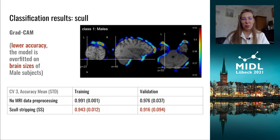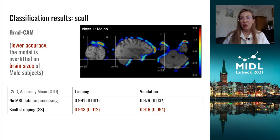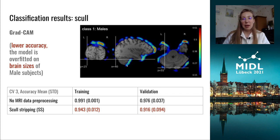After skull stripping the data, the model lost accuracy from the most available feature. The next target feature for the model became brain size — a physiologically meaningful feature, but not as dominant as the Adam's apple had been. We then thought about how to force the model to look inside the brain and use less obvious features for classification.